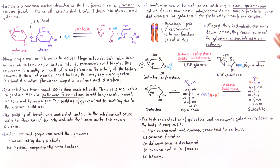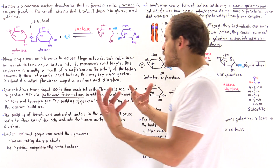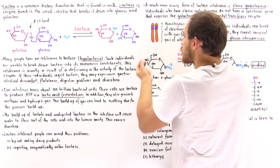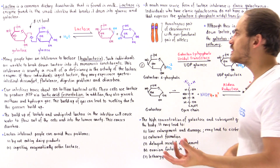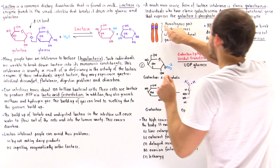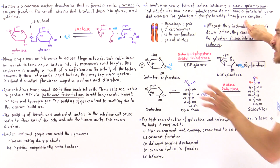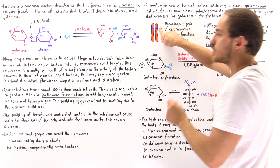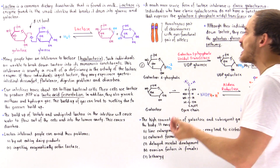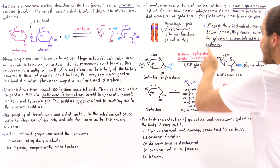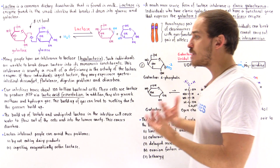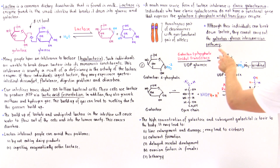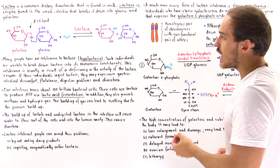Classic galactosemia is an autosomal recessive disease. Suppose we have a chromosomal pair in an individual — two alleles for the same enzyme. In this case, that gene encodes the enzyme galactose-1-phosphate uridyl transferase. In individuals with classic galactosemia, both of these genes are mutated, meaning these individuals cannot form a functional enzyme. This enzyme is an important part of the galactose-glucose interconversion pathway covered in the previous lecture.